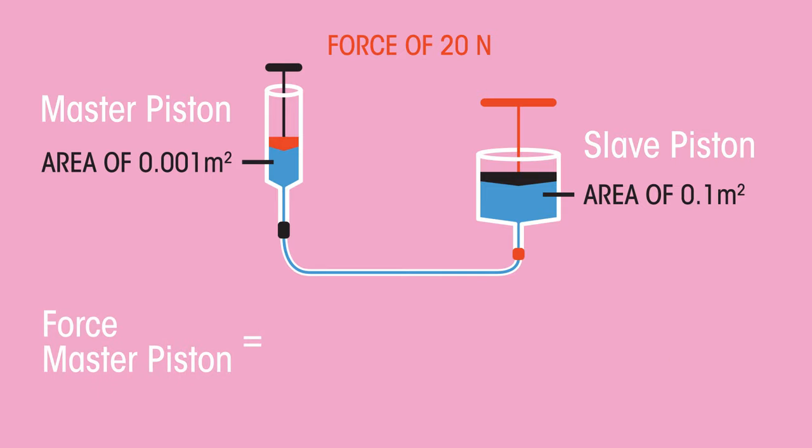So, the force on the master piston was 20 newtons, but the force applied to the slave piston was 2,000 newtons. The force has been multiplied.